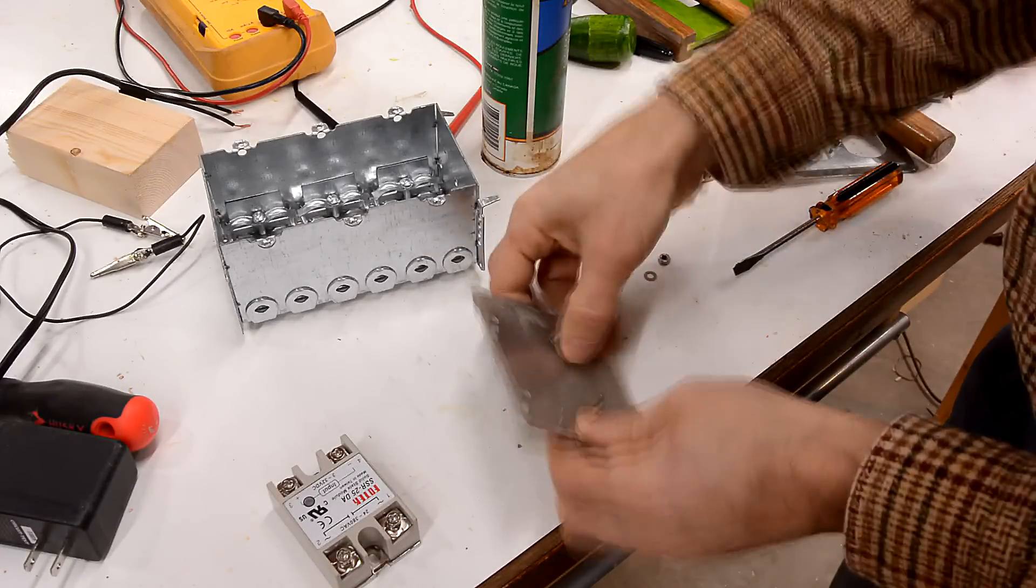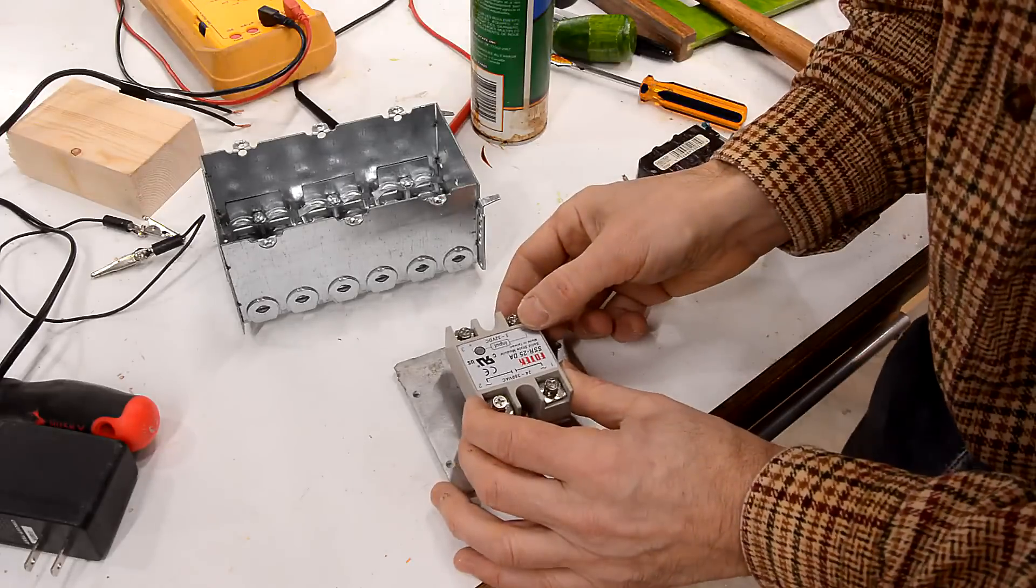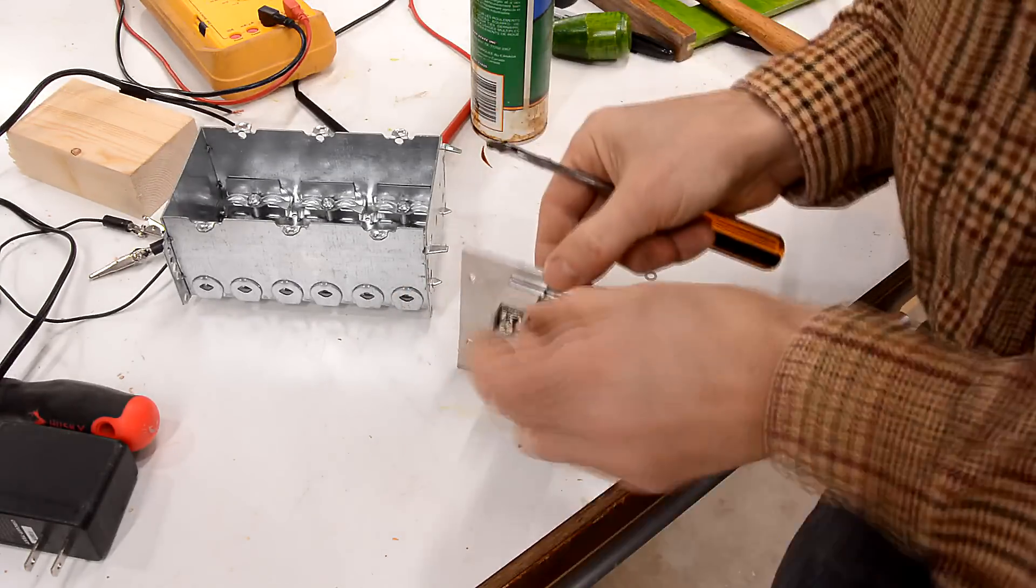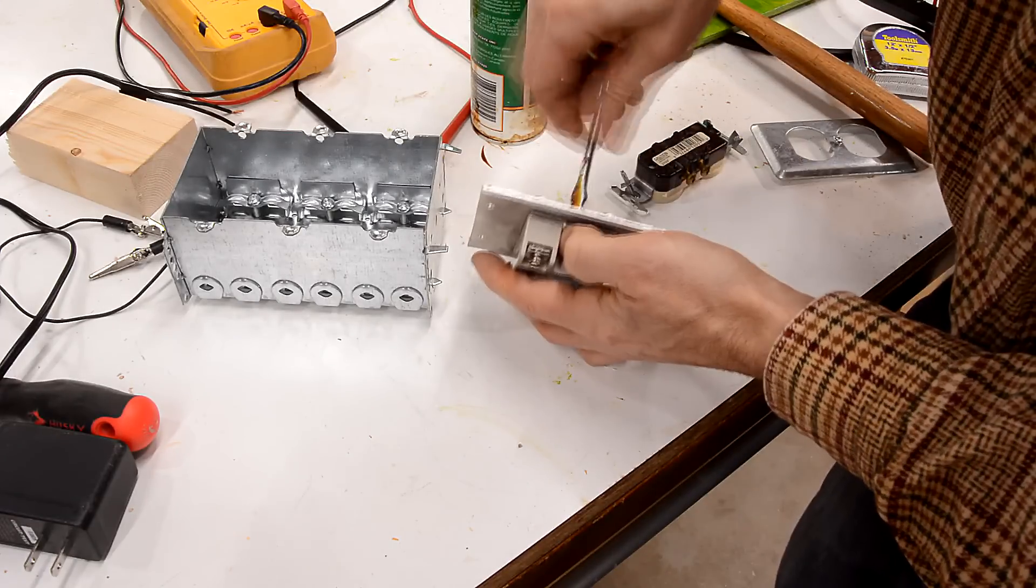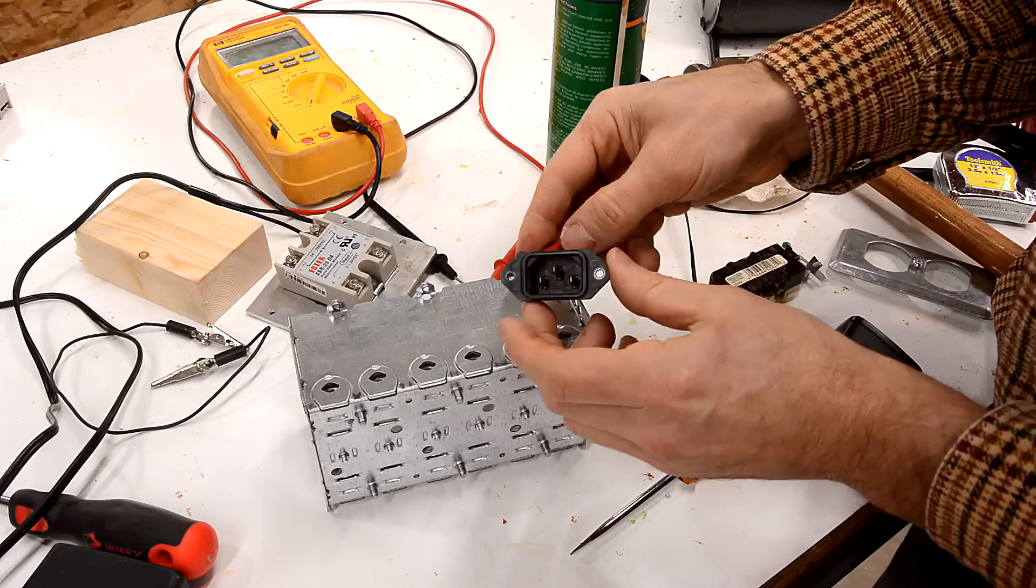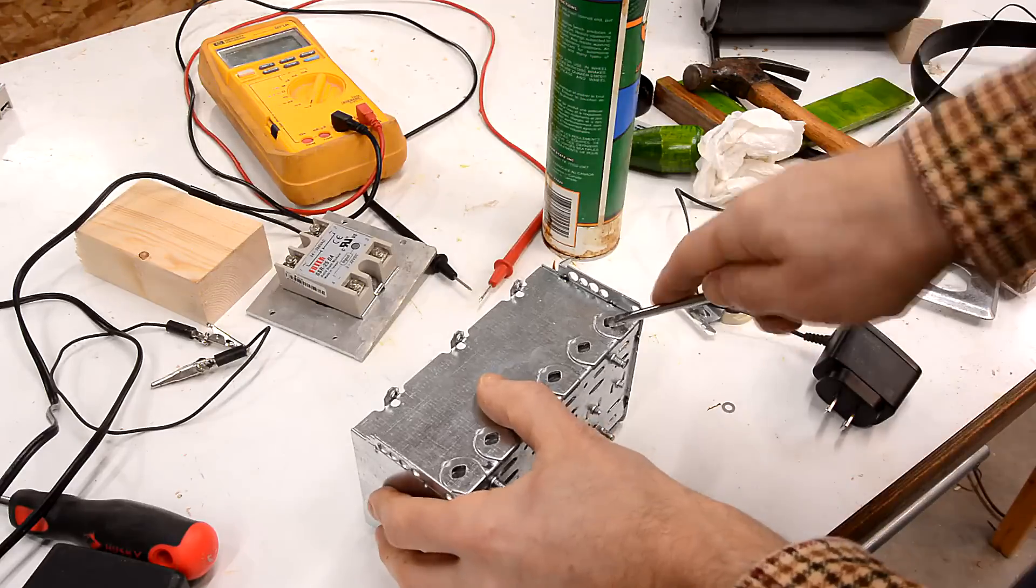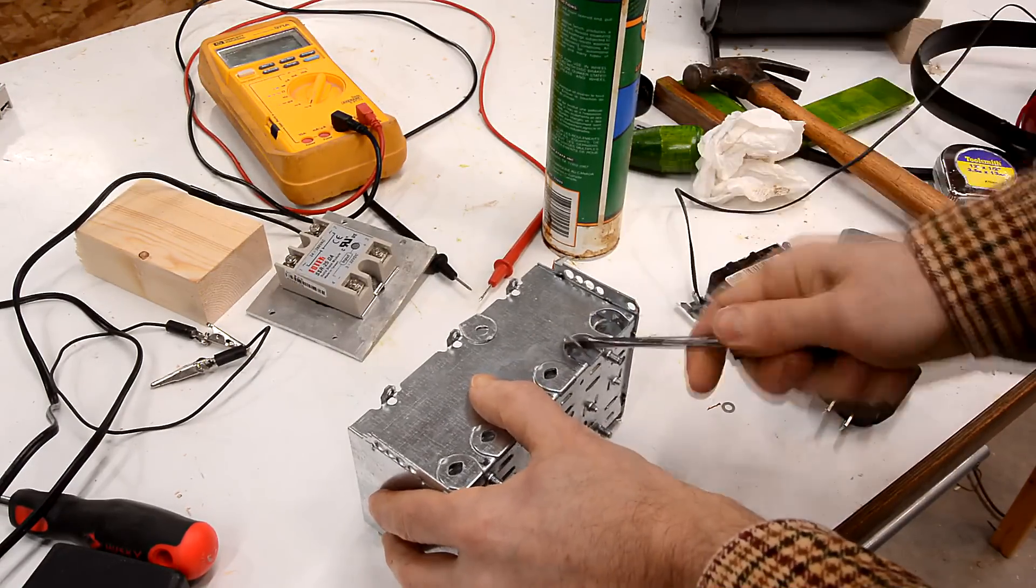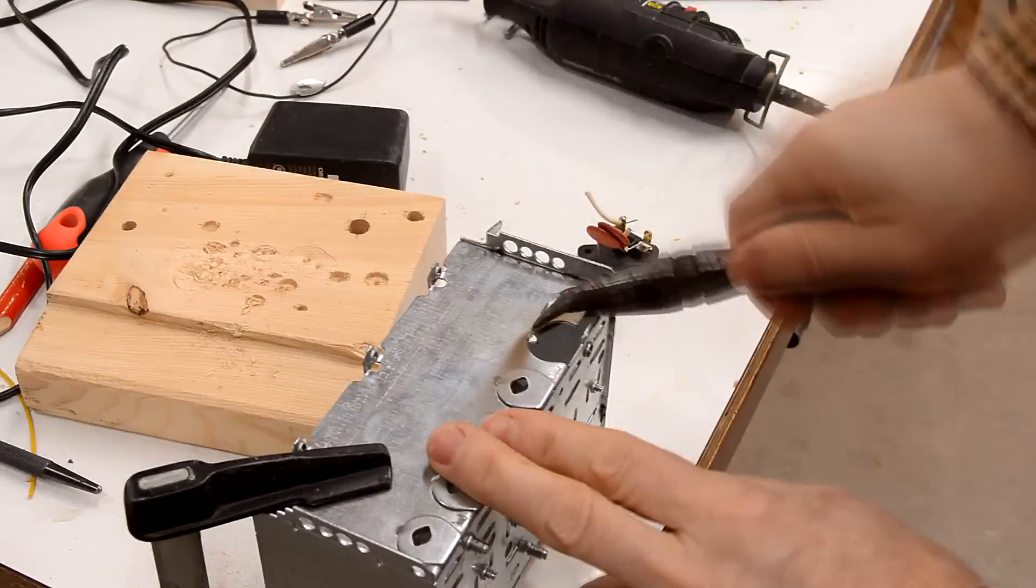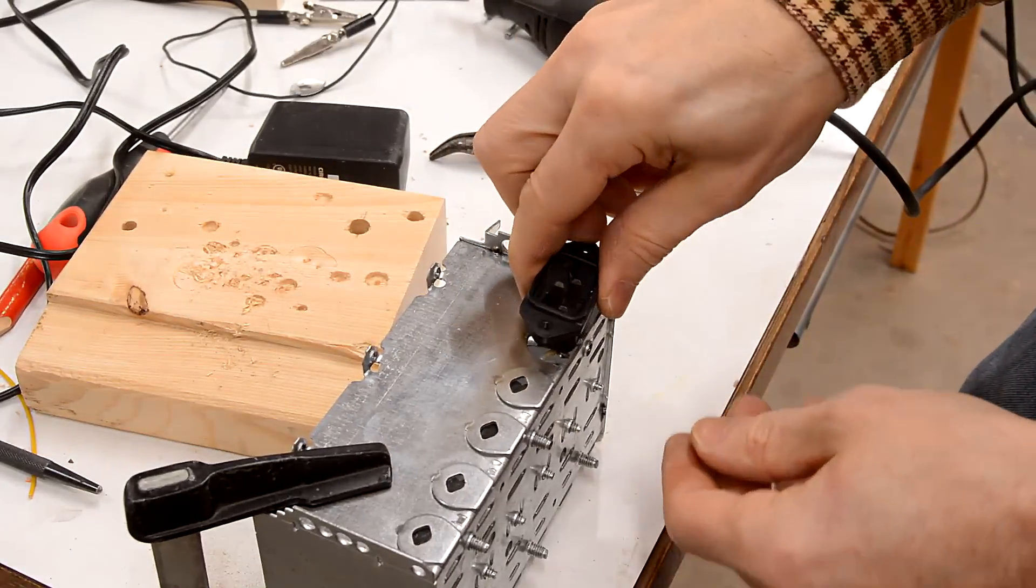Now ideally I'd be using heat sink grease for this, but regular grease will have to do. I want to use this connector for the 240 volt input. I figure maybe put that right here using some of these holes right here. So I need a little bit more room.